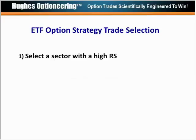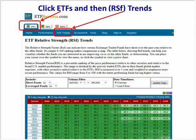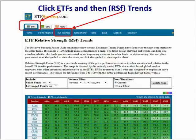Let's look at a few option trade examples. We select a sector with a high relative strength through ETFscreen.com. We log on to the website, click ETFs in the upper corner, then click RS Trends, and that will display the ETFs with the highest relative strength at the top in dark green. We like to focus on ETFs with a relative strength of 90 or higher.